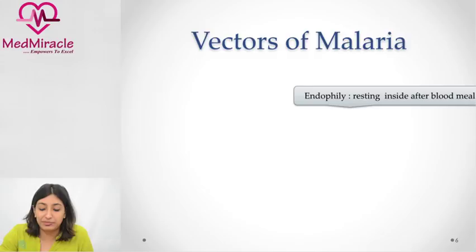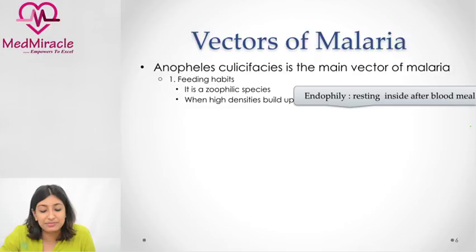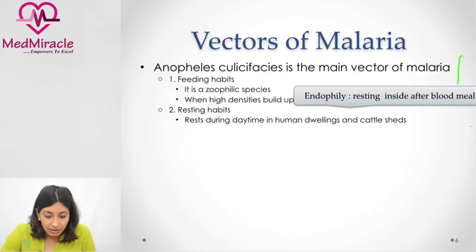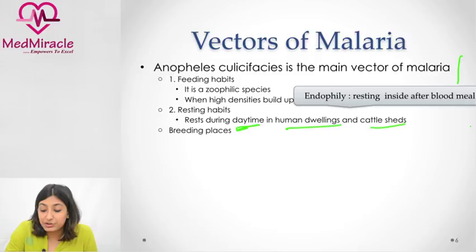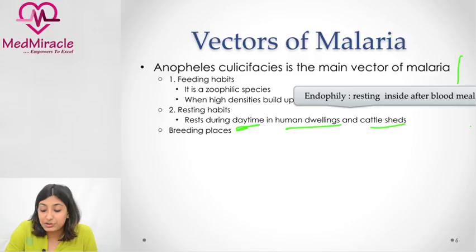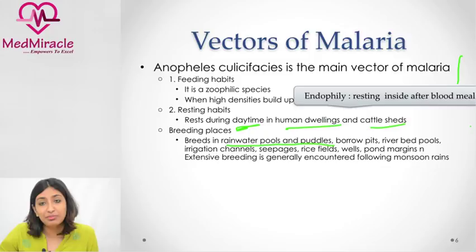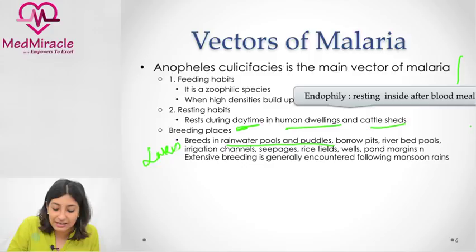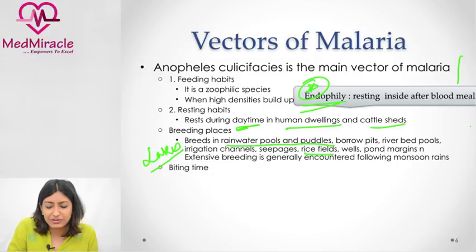Anopheles culicifacies, the main vector: its feeding habit is zoophilic — not just anthropophilic, it also infects cattle. It has high density. Resting habits: it rests during the daytime in cattle sheds and human dwellings. Breeding places are rainwater pools and puddles, with extensive breeding during monsoon rains in rural areas — lakes, pools, puddles, and rice fields. Endophily is a potential exam question — it refers to the habit of resting inside after a blood meal.